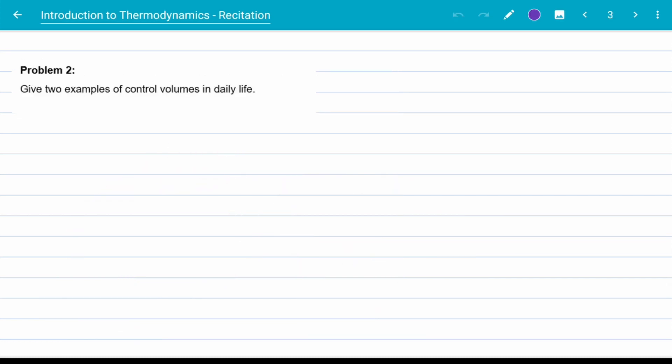Now let's go to problem two. It asks to name two examples of control volumes in our daily life. We already know some industrial examples of control volumes, such as pumps, turbines and such, but here we are looking for some easier examples.